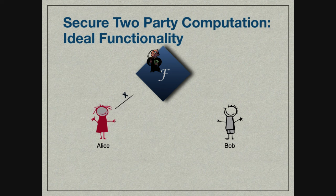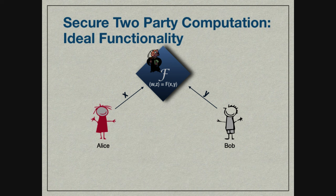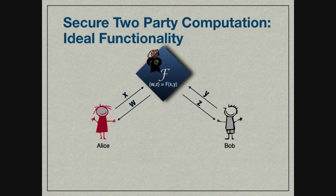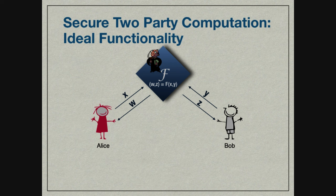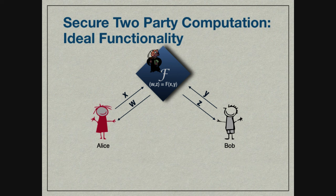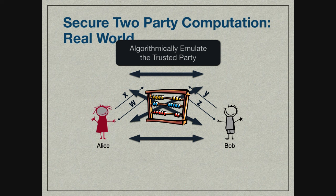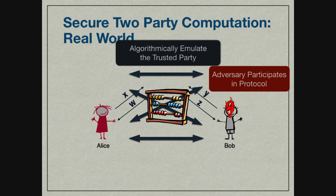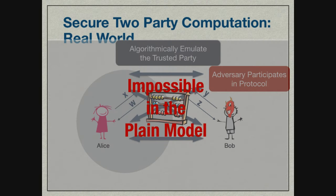Suppose two parties each have secret inputs and want to evaluate a function on these inputs. The function generates outputs for both parties. If they had a trusted third party doing this job, even if one became adversarial, the other party's input would remain hidden. But in the real world, parties need to algorithmically emulate this.